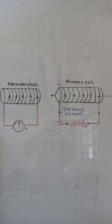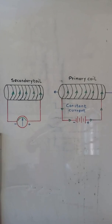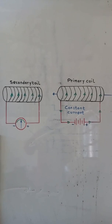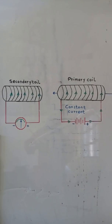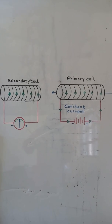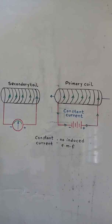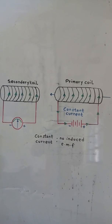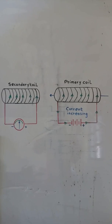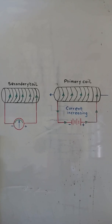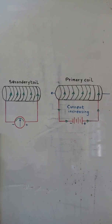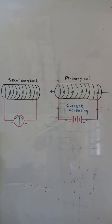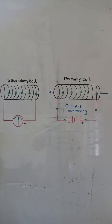When the current in the primary coil is constant, there will be no induced EMF in the secondary coil. When current in the primary coil is increasing, there will be an induced EMF in the secondary coil.